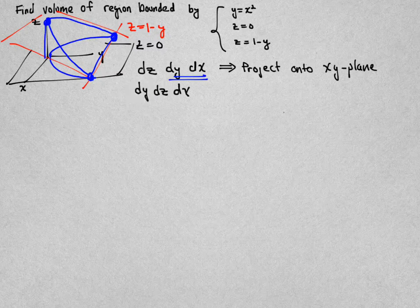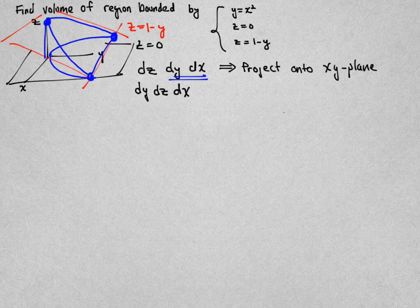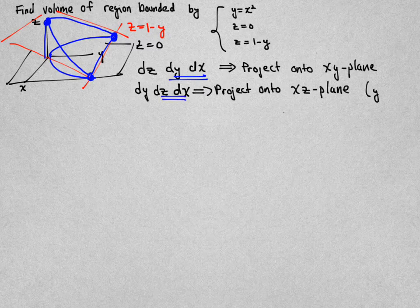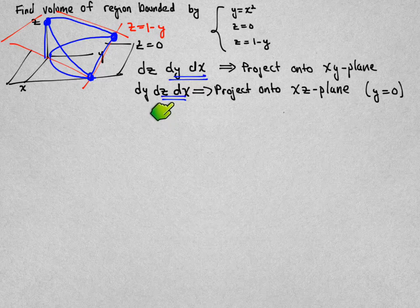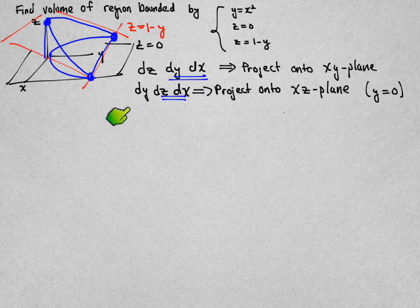Instead why don't we look at integrating in the order dy, dz, and dx and just following the analogy above why don't we project onto the xz-plane to determine the limits of integration for x and z first and that occurs when y is equal to zero. We'll look at that picture and then we'll use that to determine the limits of integration for y.